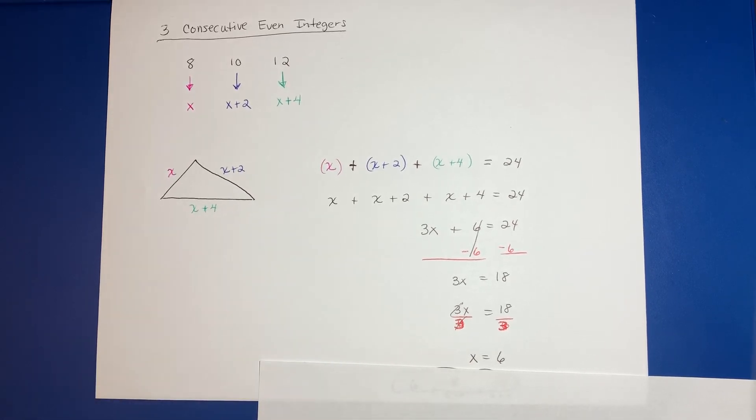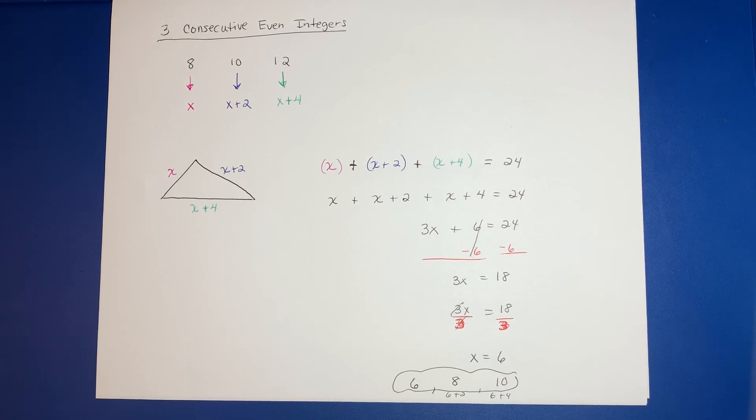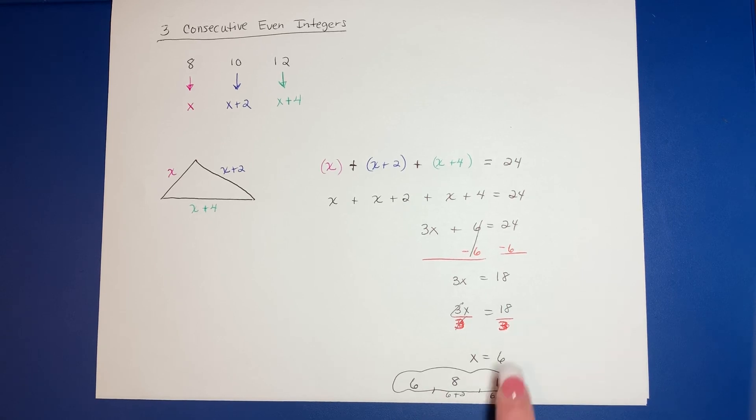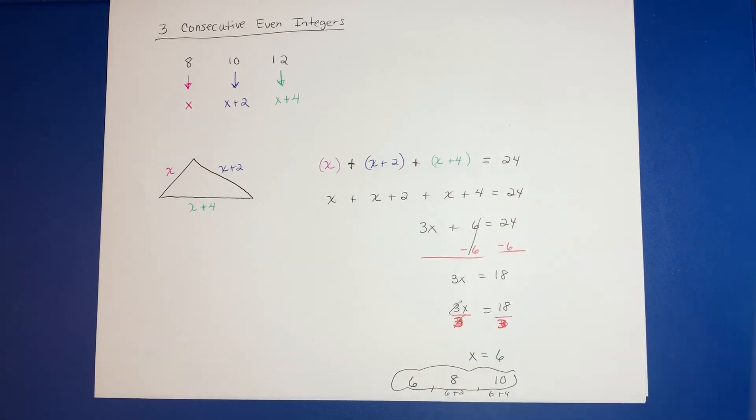This would be 6 plus 2, which would be 8, and this would be 6 plus 4, which would be 10. So those are your three consecutive even integers. And if you check, 6 plus 8 plus 10 adds up to 24. So I hope that explains that problem for you.